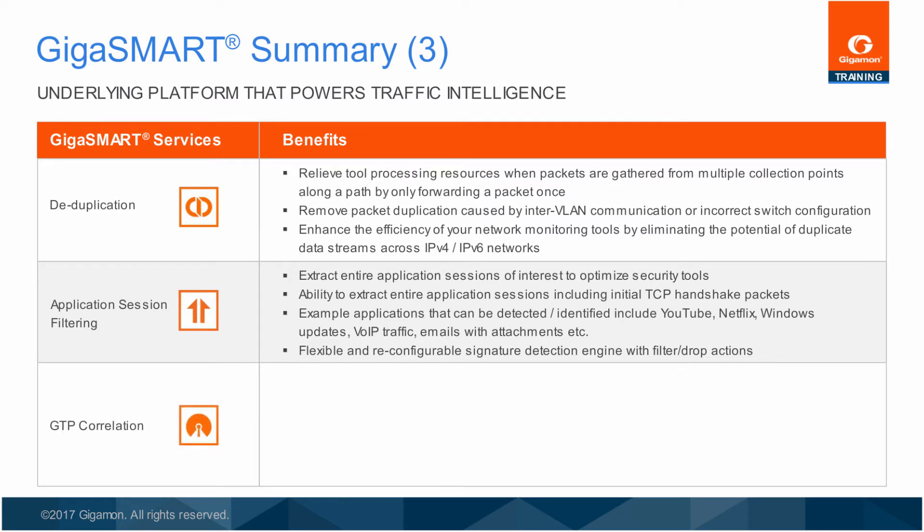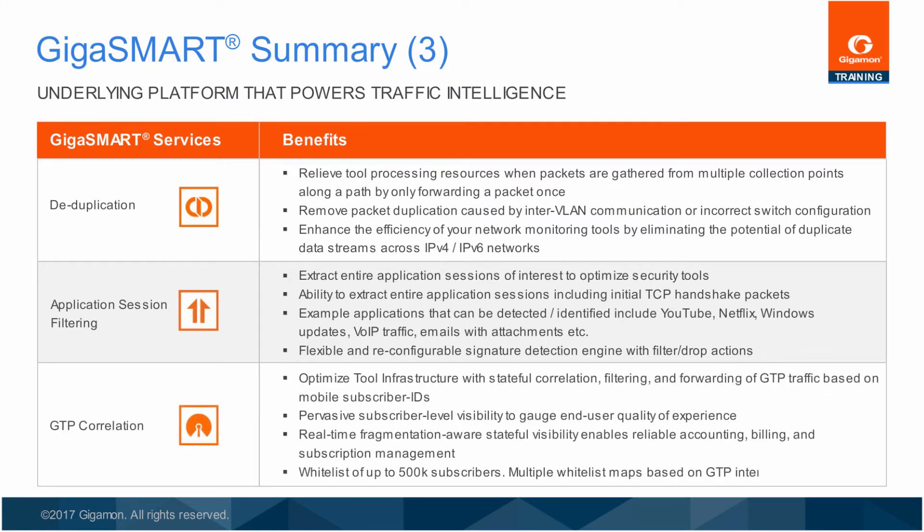GTP Correlation optimizes tool infrastructure by accurate filtering, replicating, and forwarding monitored subscriber sessions. It correlates GTP data and control traffic from tunneled subscriber sessions so that tools are able to properly inspect packets. GTP Correlation also supports stateful filtering based on IMSI, IMEI, and MSISDN subscriber IDs.